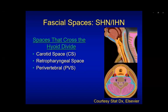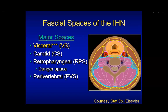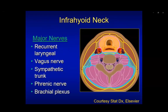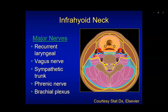The spaces that cross the hyoid divide include the carotid, retropharyngeal, and perivertebral spaces. The visceral space is only in the infrahyoid neck. There are many important nerves in the neck: the recurrent laryngeal nerve lives within the visceral space at the tracheoesophageal groove; the vagus nerve is within the carotid sheath between the internal carotid artery and internal jugular vein posteriorly; the sympathetic trunk runs along the medial margin of the carotid space; the phrenic nerve lives in the perivertebral space on the anterior margin of the anterior scalene muscle; and the brachial plexus exits through the anterior and middle scalene muscles.